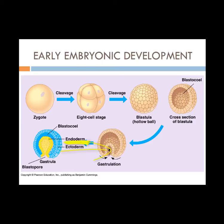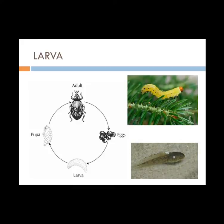The endoderm develops into the GI and respiratory tract. A lot of animals have a larval stage. A larva is an immature form that is very different from the adult, and it undergoes metamorphosis to become the adult.